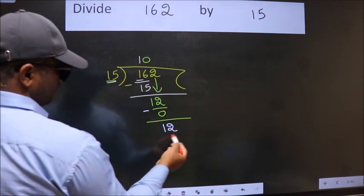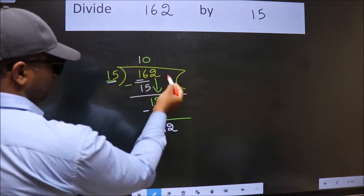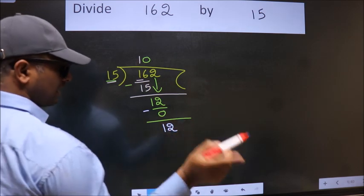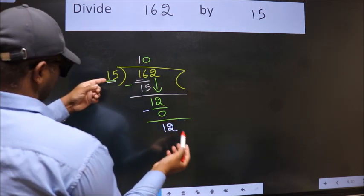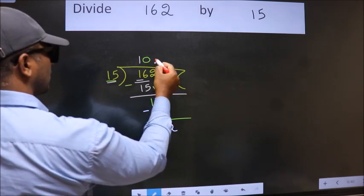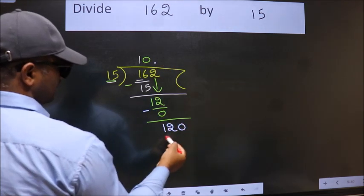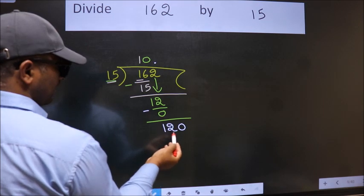Over here we did not bring any number down, and 12 is smaller than 15, so now we can put dot and take 0. So 120. When do we get 120 in 15 table?